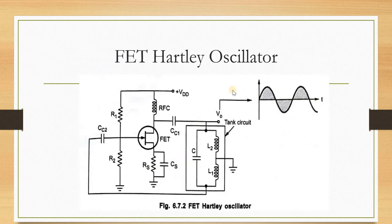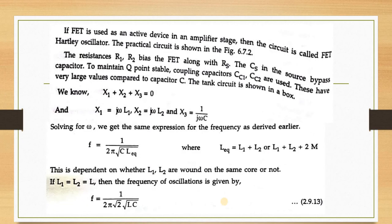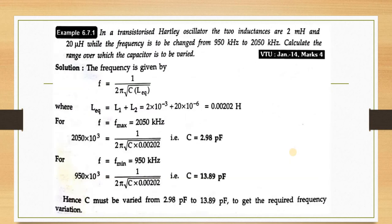Next is the FET Hartley oscillator. The only difference is the active device is a FET (with drain, source, and gate terminals) instead of a BJT. The tank circuit connects between drain and gate. The common-source configuration provides 180-degree phase shift; the feedback tank circuit adds another 180 degrees. The frequency of oscillation is the same: F = 1/(2π√(L_eq · C)), where L_eq = L1+L2 or L1+L2+2M.